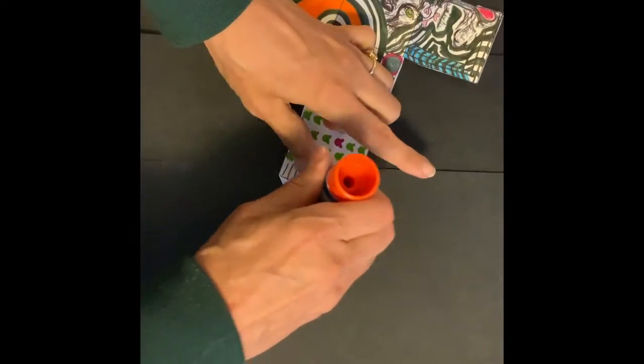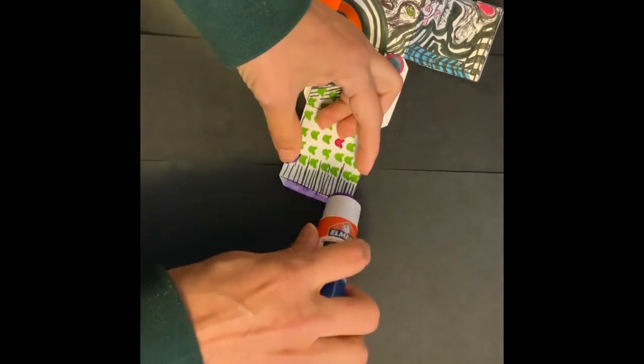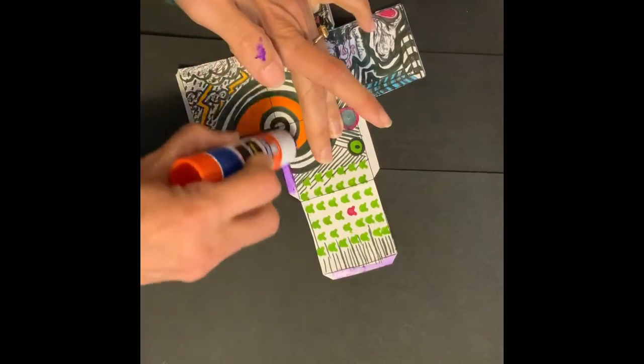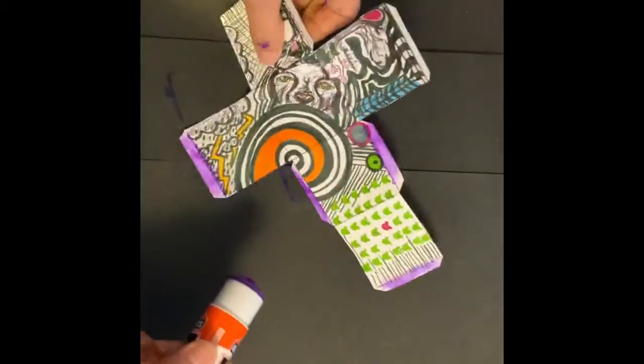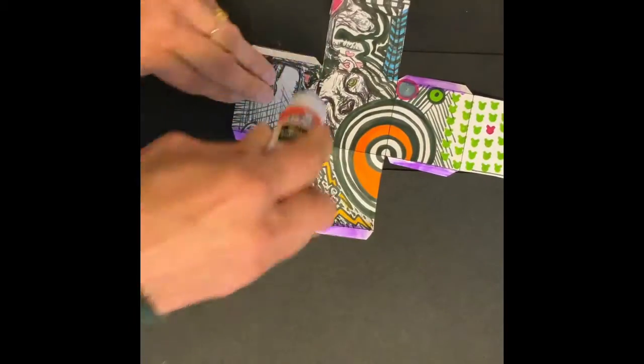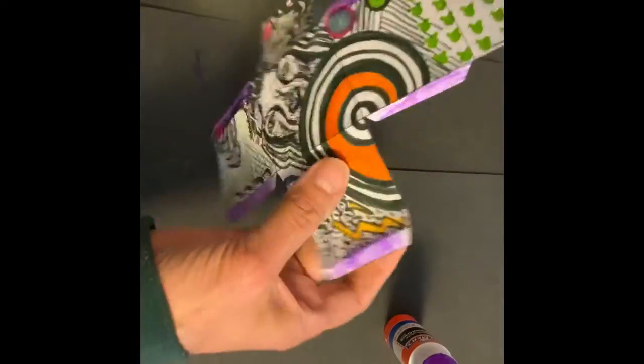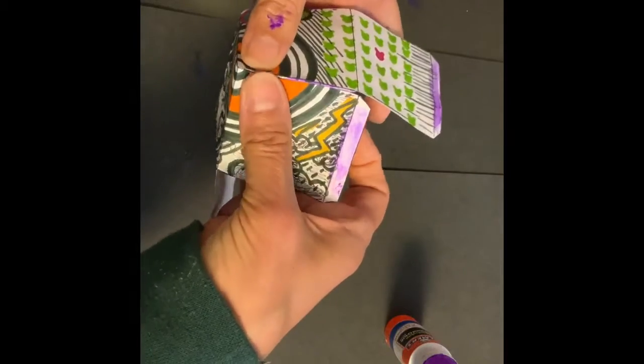Put that glue on each of your flaps. I like the purple glue because I can tell when it starts to dry. Whatever glue you have, it doesn't even have to be stick glue. It can be straight up Elmer's. And then just start sticking it to the sides where they would join.